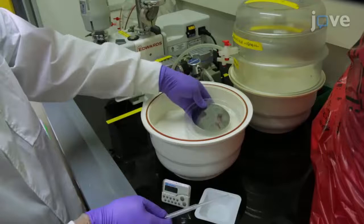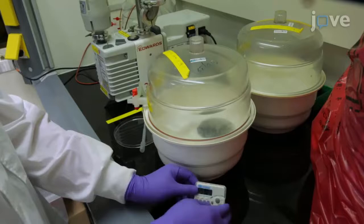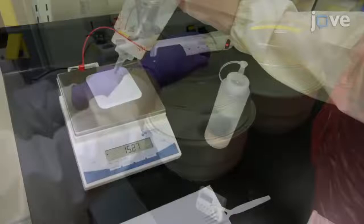Start by preparing the PDMS device. Place a wafer mold and a weighing dish with 100 µL of trichlorosilane in a desiccator and apply a vacuum for 15 minutes. Stop the vacuum and silenize the wafer mold and the desiccator at 37°C for at least one hour.